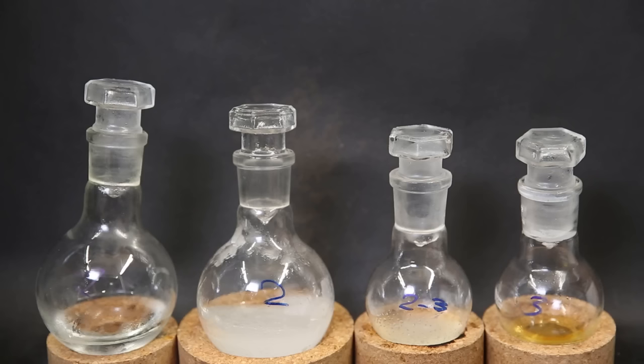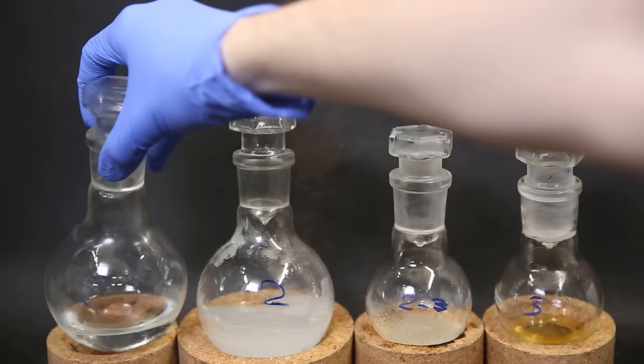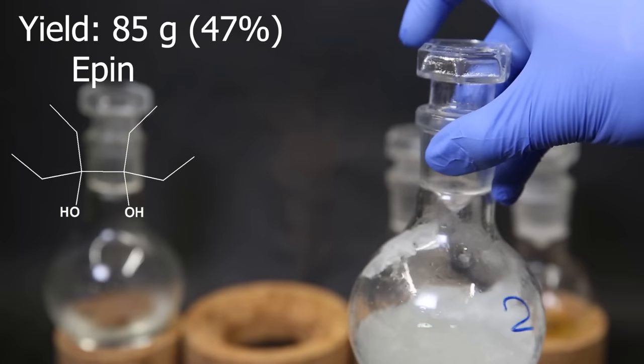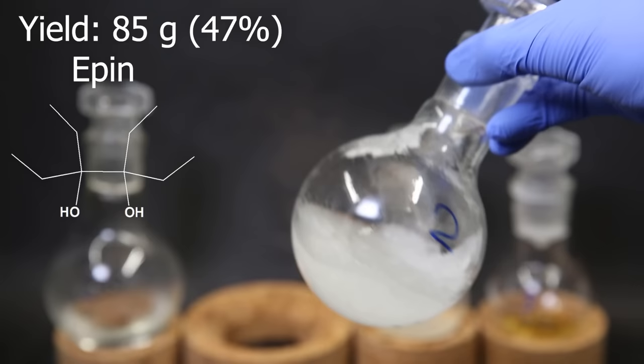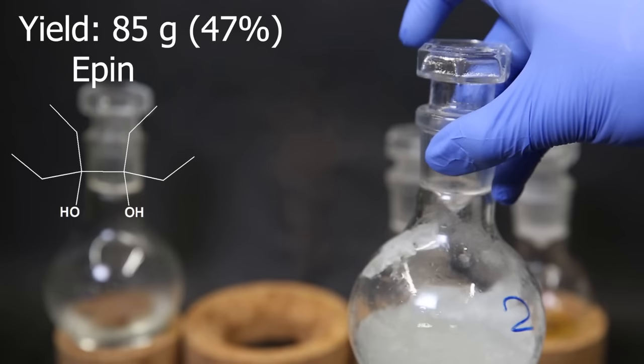I put all of them into the freezer to check which one is the E-PIN. Since the E-PIN has a melting point of 28C, it should solidify. The only fraction that solidified was fraction 2, so the final yield of E-PIN is 85 grams, which is 47%. We can see it is a bit mushy because the temperature here is around its melting point. In its liquid form, it is a very viscous clear oil.